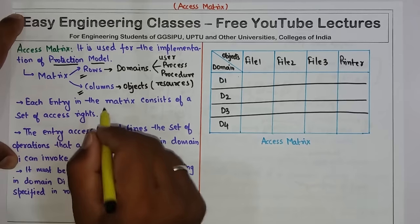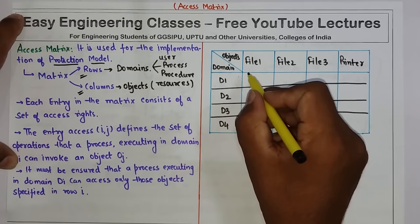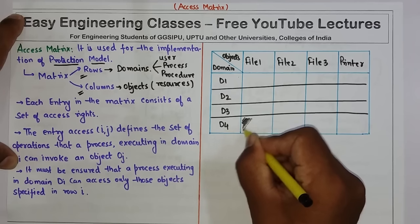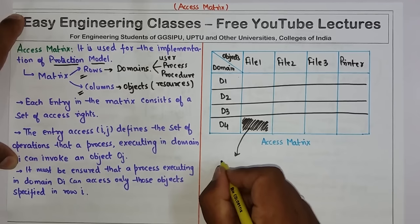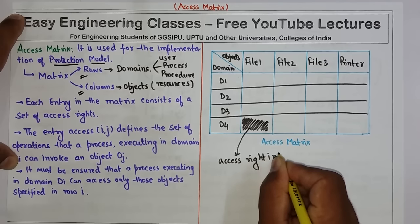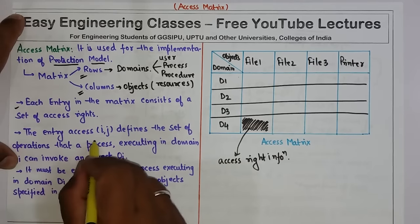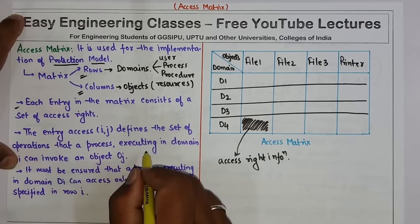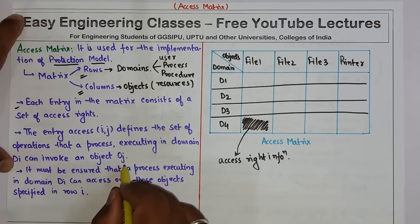Now each entry in the matrix consists of a set of access rights. The entry access[i][j] defines the set of operations that a process executing in domain di can invoke on object oj.